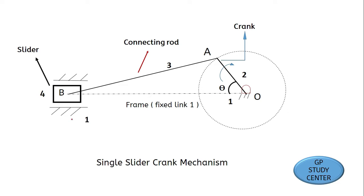In this mechanism, the fixed link and crank form a turning pair. The crank and connecting rod form a second turning pair. The connecting rod and slider form a third turning pair. The slider and fixed link form a sliding pair. Basically, the mechanism functions to transmit rotary motion.